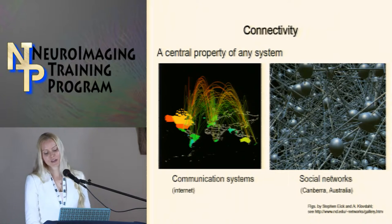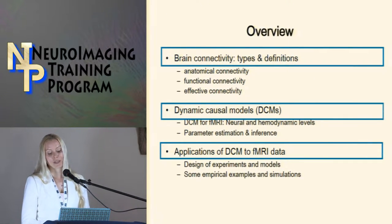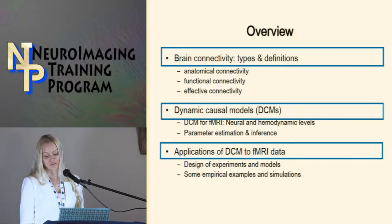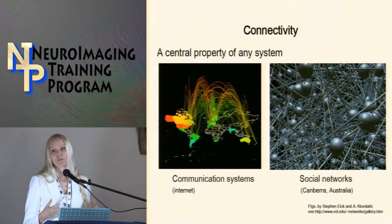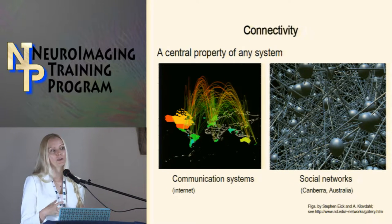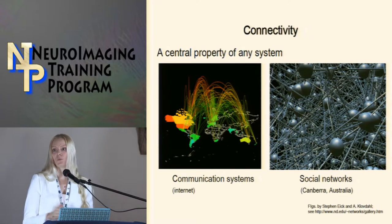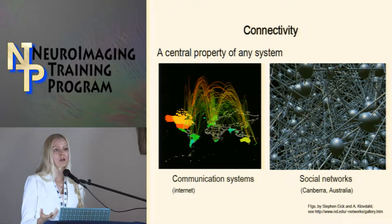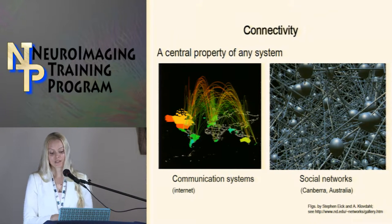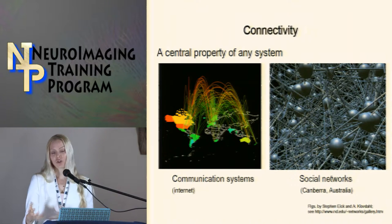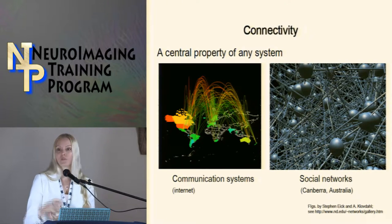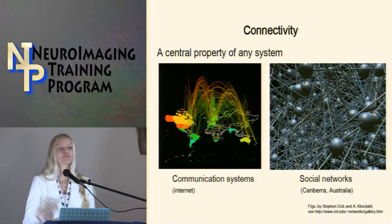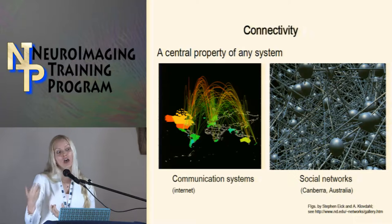So, brain connectivity. There are different types: anatomical connectivity — what are the actual connections between regions of the brain — functional connectivity, and effective connectivity. Connectivity is a central property of any system. There are many different models of connectivity we can analyze, for example, the way signals are transferred over the Internet, or in social networks — how students are integrated in classrooms and how information is transferred. I recently did an analysis of students with autism placed in mainstream classrooms, looking at how they formed and lost friendships over the course of the school year.